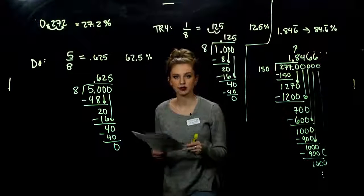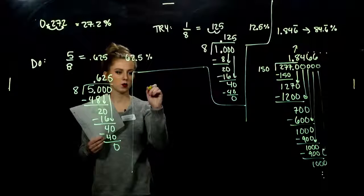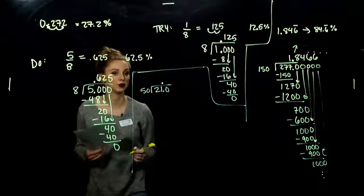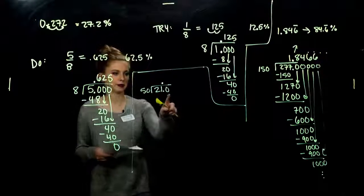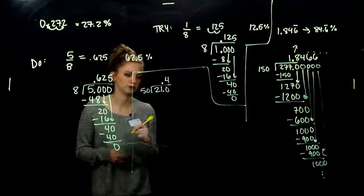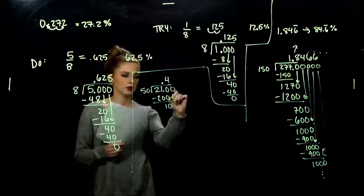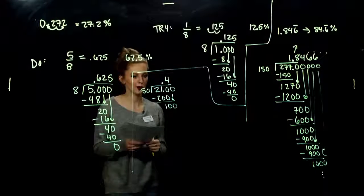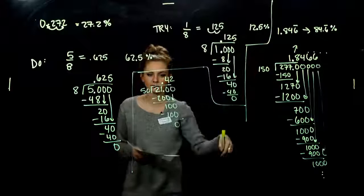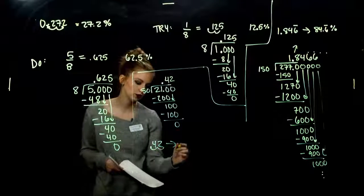Last one: convert 21/50 to percent notation. Long division: 21 divided by 50. 50 into 210 is 4 times — 200, remainder 10. Bring down a zero: 50 into 100 is 2 exactly. We have a terminating decimal: 0.42. As a percentage, moving 2 to the right: 42%.